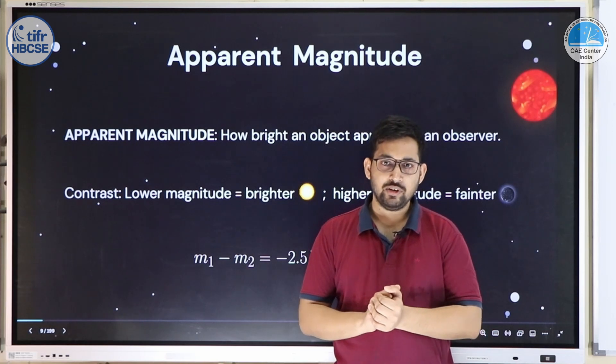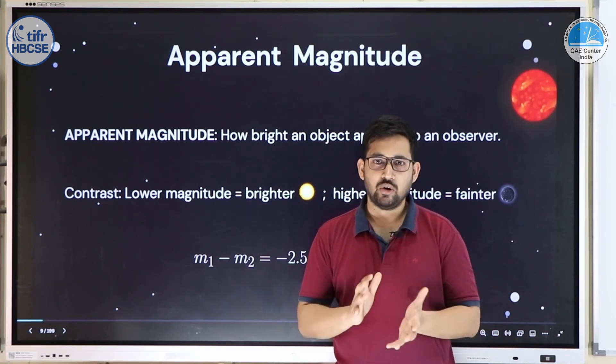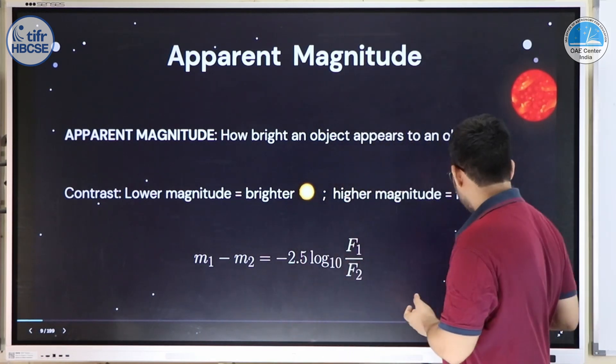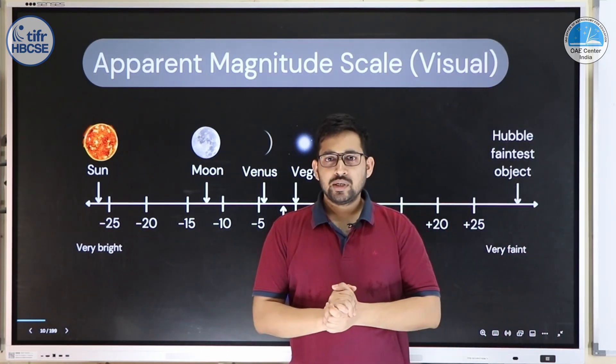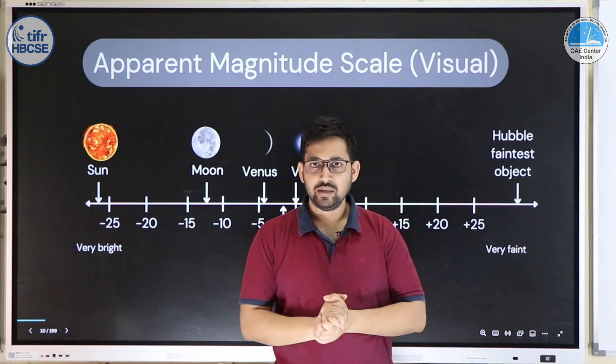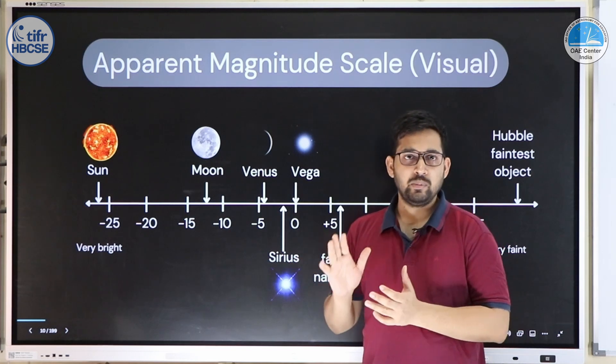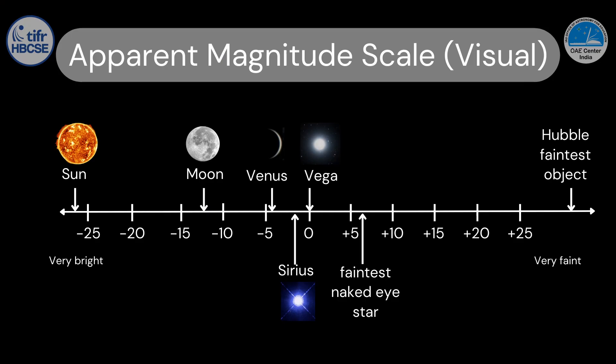So far we've only discussed differences in magnitude, not absolute values. In the visual magnitude scale — since astronomers are often interested in the visual range of the electromagnetic spectrum — the Sun has a visual magnitude of roughly −26.5. The full Moon has a magnitude of around −12.5, a jump of about 14 magnitudes corresponding to a brightness ratio of roughly 400,000. Venus, the third brightest object in the sky, can reach magnitude −4.4. Vega appears at roughly zero magnitude.